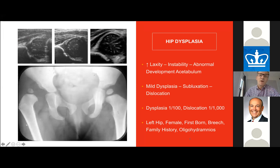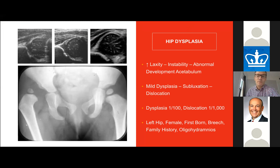The biggest one is hip dysplasia, which is very common — one in 100 children has some degree of hip dysplasia. Frank dislocation occurs in one out of a thousand newborns. It can range from very mild underdevelopment of the acetabulum all the way to a complete dislocation of the femoral head. Increased laxity and intrauterine causes are thought to lead to instability and abnormal development of the acetabulum.